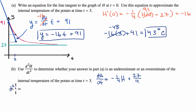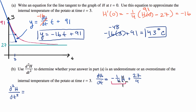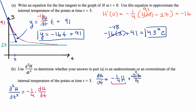Now, what is the second derivative of H with respect to time going to be? The derivative of the first term with respect to time is the derivative of that term with respect to H times the derivative of H with respect to time — this comes straight from the chain rule. So the second derivative equals negative one-fourth times dH/dt. The derivative of the constant 27/4 with respect to time is zero, so just like that we have the second derivative of H with respect to time.